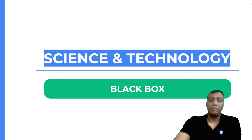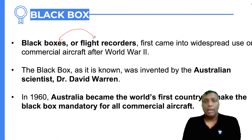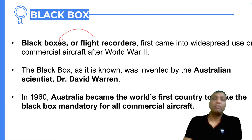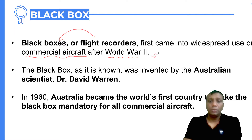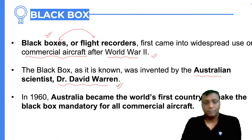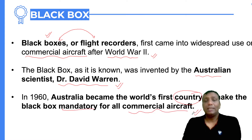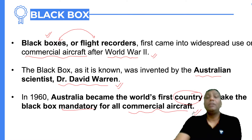Now finally we are into the discussion of the topic — the black box. The black box is also called flight recorders, so you can use either term; both are the same. The black box came into news worldwide after World War Two in the case of commercial aircraft. The black box was invented in Australia by Dr. David Warren. Australia became the first country to make the black box mandatory for all commercial aircrafts.